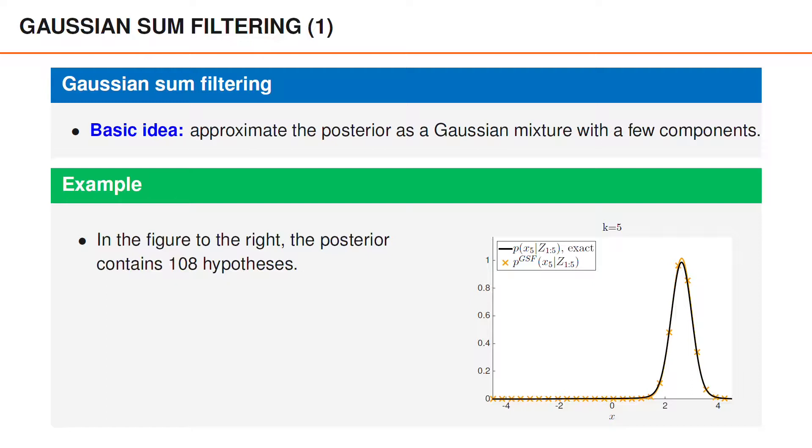In the figure to the right, the exact posterior in black contains 108 components. The orange curve marked with crosses illustrates the output from a Gaussian sum filter with five components. As you can see, with only five components, we obtain an approximation which is much more accurate than what we would obtain using nearest neighbor or probabilistic data association.